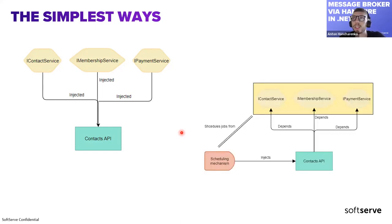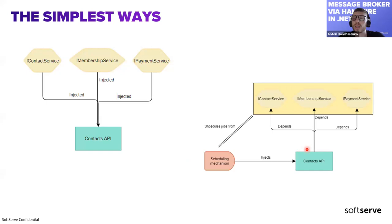Another option is creating background workers with a scheduling mechanism — scheduling jobs to execute in the background while standard APIs run as usual. The problem is this increases cohesion between different parts and modules, and even between different projects in the same solution, because the scheduling mechanism needs to know beforehand about the specification of various methods it should call. So this wasn't ideal either.